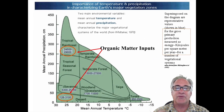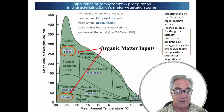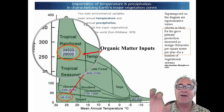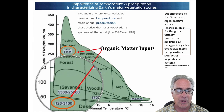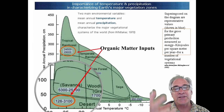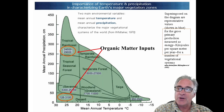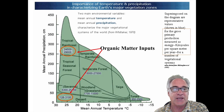If you look at this graph, tropical rainforests have the highest amount of energy per acre than anything else, where the lowest is the desert. And why is that? Well, it's the combination of high temperature and also high precipitation.